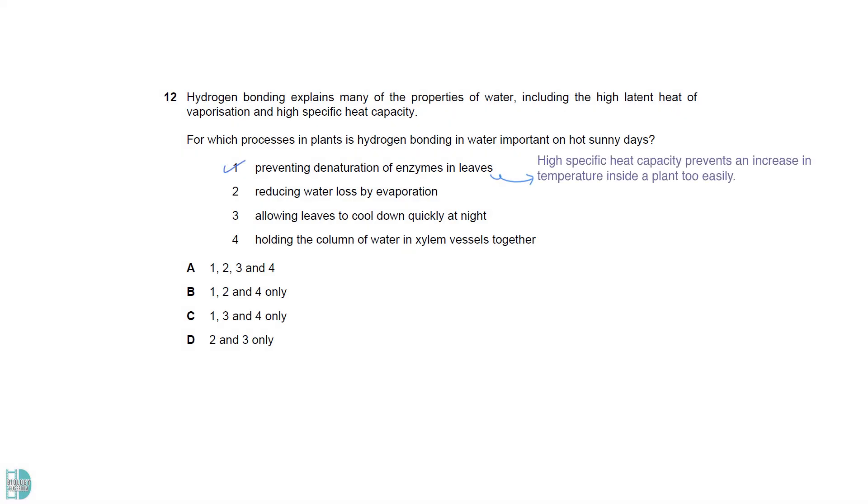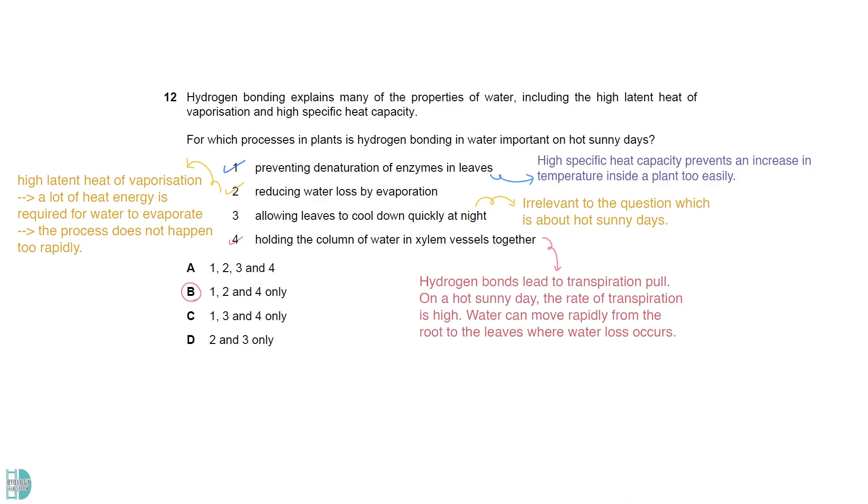Water's high specific heat capacity prevents an increase in temperature inside a plant too easily. So, it is true that it can avoid the denaturation of enzymes due to a high temperature on a hot day. Due to the high latent heat of vaporization, a lot of heat energy is required for water to evaporate. This prevents the process from happening too rapidly when the weather is hot. Statement 3 talks about what happens at night, which is irrelevant to the question. Statement 4 is correct. Hydrogen bonds lead to transpiration pull. On a hot sunny day, the rate of transpiration is high. Water can move rapidly from the roots to the leaves where water loss occurs.